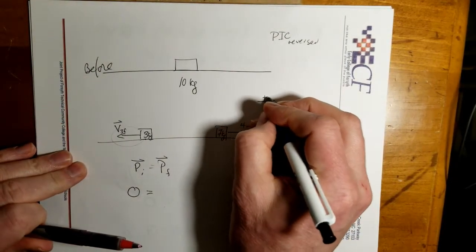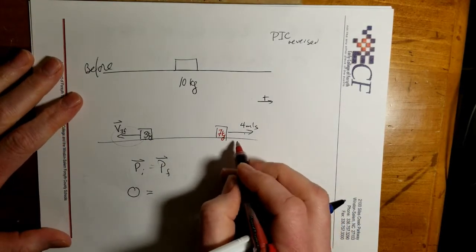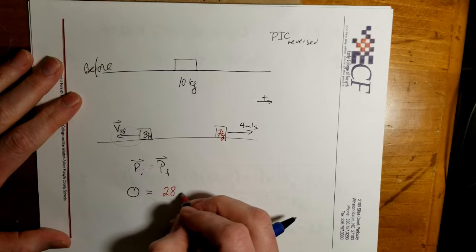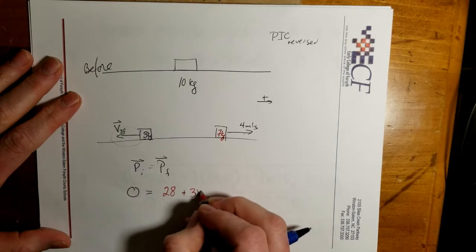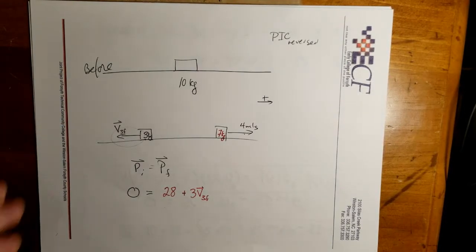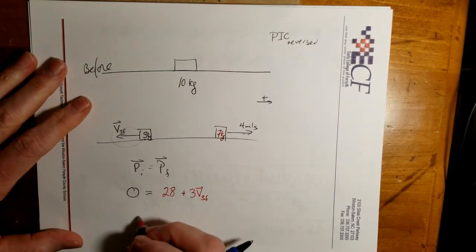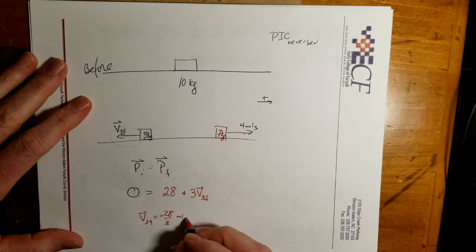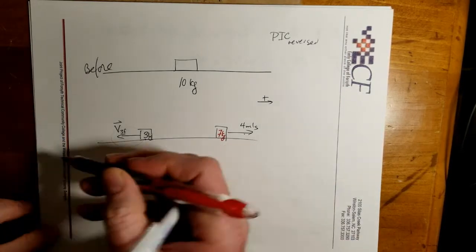Let's go ahead and make to the right positive. And so this will end up being 28 plus 3V3F. And so if you solve for it, V3F is going to be negative 28 thirds meters per second. The negative just means it's in the negative direction.